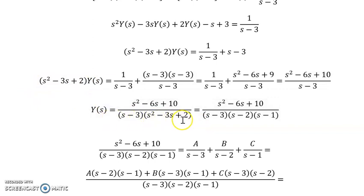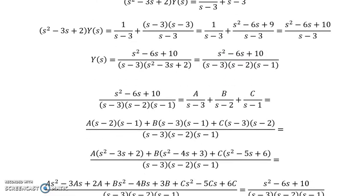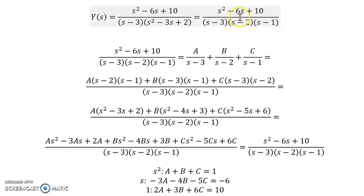This expression here factors into (s minus 2) and (s minus 1). I don't have any formulas that have this form in my Laplace transform table, so I need to apply partial fractions to split this up into simple exponentials that I can then apply my inverse Laplace transform to. For partial fractions, I take each of my linear factors and set them up as A over the first factor, B over the second factor, and C over the third factor.